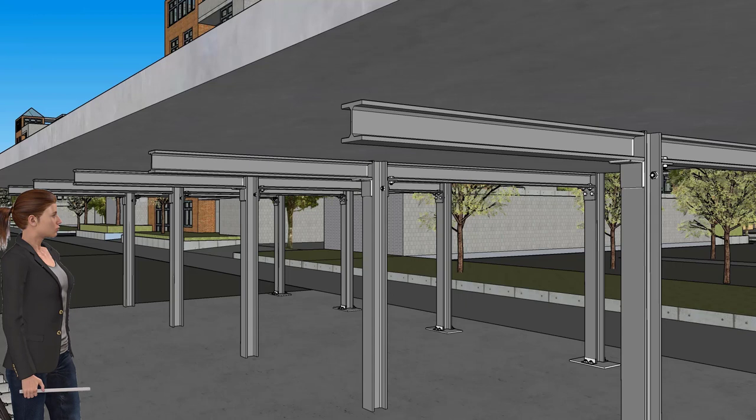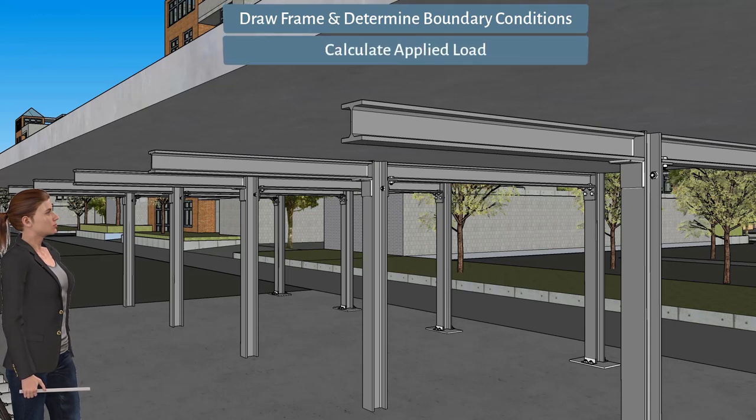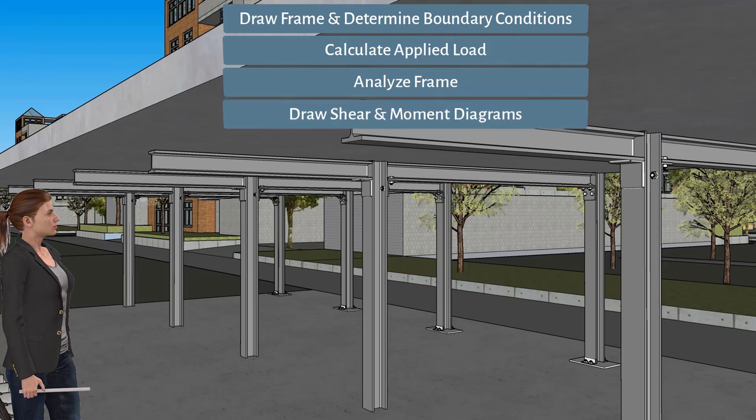Here are the steps for solving this problem: 1. Draw the line diagram for the frame and indicate its boundary conditions. 2. Calculate the load due to the weight of the roof. 3. Analyze the frame. 4. Draw its shear and moment diagrams.